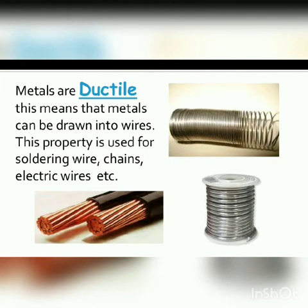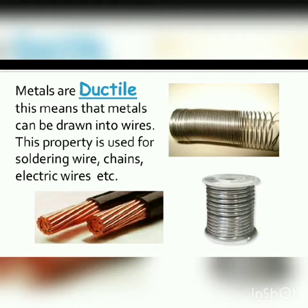Metals are ductile, meaning they can be drawn into wires. This property is used for soldering wire, chains, and electrical wires. Metals are hard but flexible — they can change their shape and be molded into different forms.